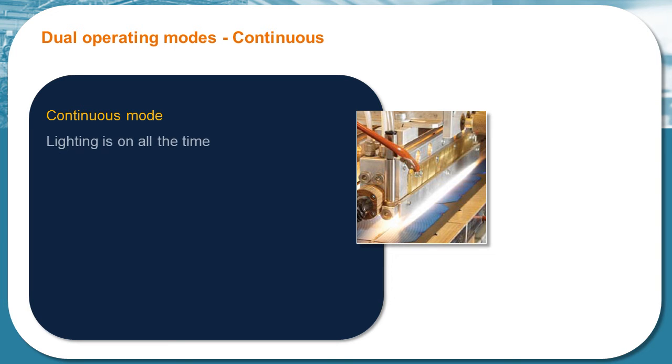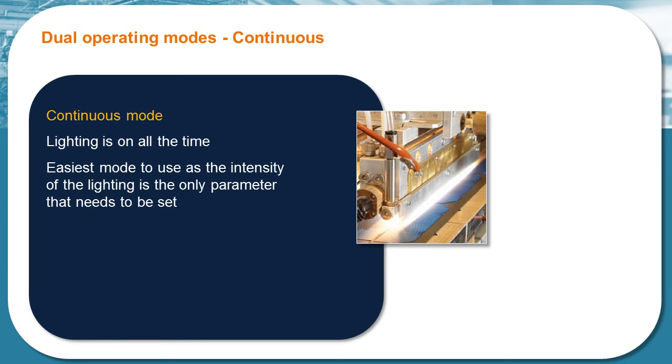Continuous output is where the lighting is on all the time, and you are getting the benefit of a highly stable current supply. This is the easiest mode to use as the intensity of the lighting is the only parameter that needs to be set.